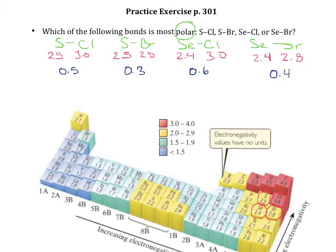So to be the most polar, you want to have the largest difference in electronegativity. Our largest electronegativity difference is going to be the bond between selenium and chlorine because that had a difference of 0.6.